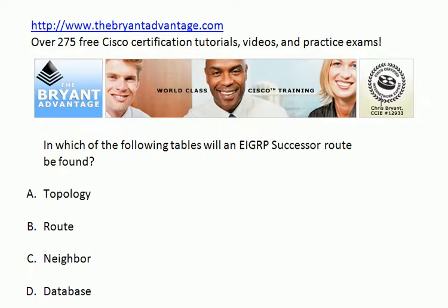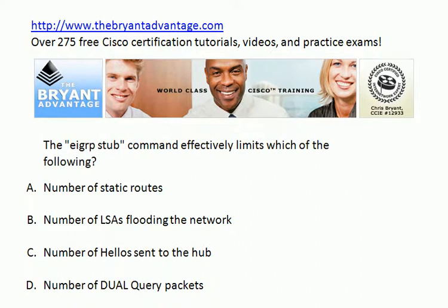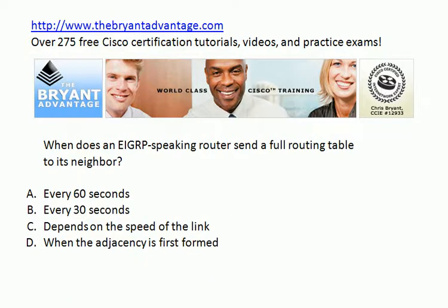Answer 6: you'll actually see the successor route in two of our three EIGRP tables. The EIGRP tables are topology, route, and neighbor — there is no official EIGRP database table. You'll find the successor route in both the route and topology tables. Answer 7: the EIGRP stub command effectively limits the overall number of DUAL query packets in your network, because EIGRP stub routers are not going to be sent queries. Answer 8: an EIGRP speaking router only sends a full routing table at the very beginning of the adjacency when it's first formed. It will send updates after that when there are changes to the network, but it will not send another full routing table.